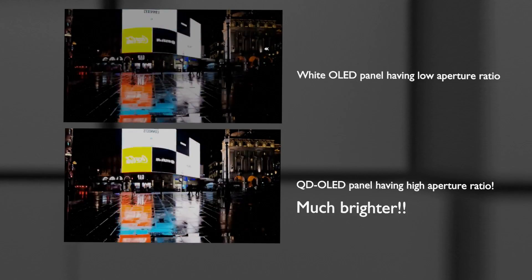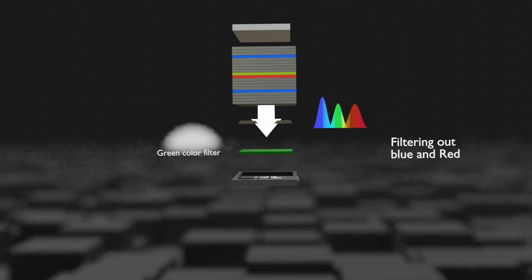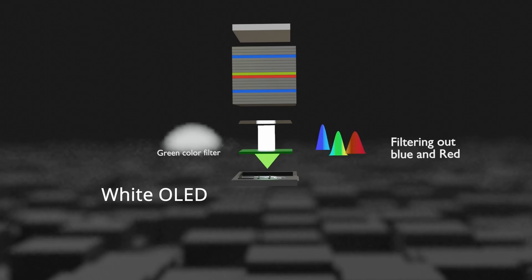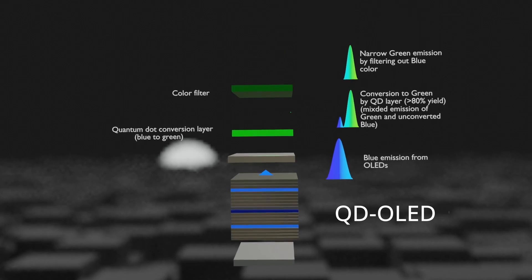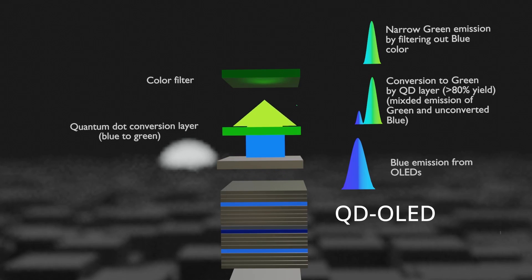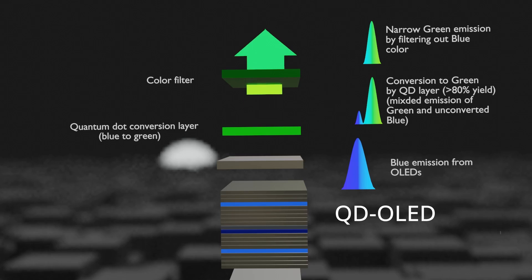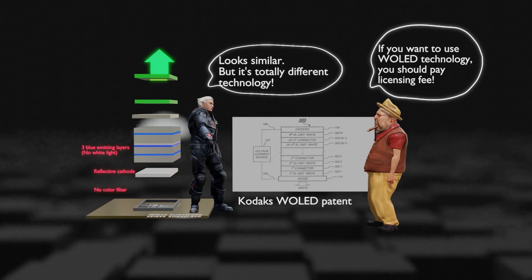White OLED TVs have half the brightness setting compared to LCD, but the difference can be overcome to some extent by applying top emission technology. Another advantage of QD OLED is its excellent color reproduction ability. White OLED implements RGB colors by filtering white light with color filters; however, it is difficult to obtain a sharp spectrum due to limitations of the color filter. On the other hand, QD OLED uses blue light and converts it into green and red, giving it the advantage of realizing high electrical efficiency and an excellent color gamut. So it also has the advantage of being free from the aforementioned patent issues.